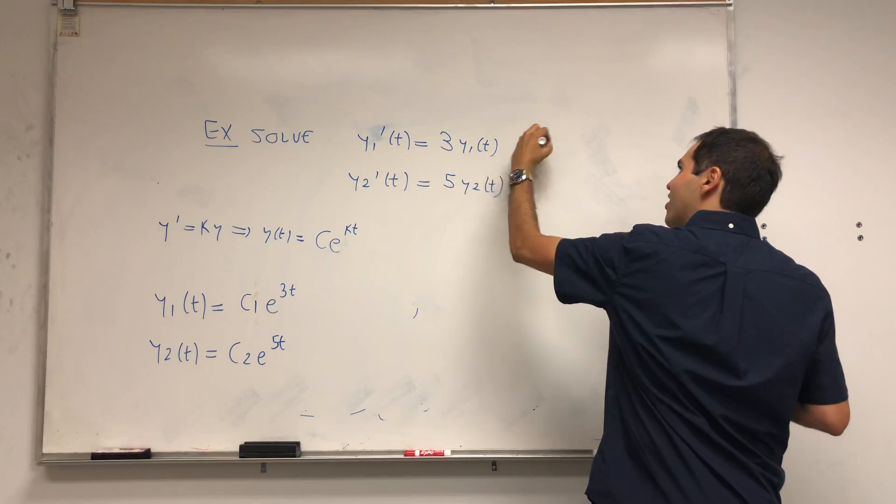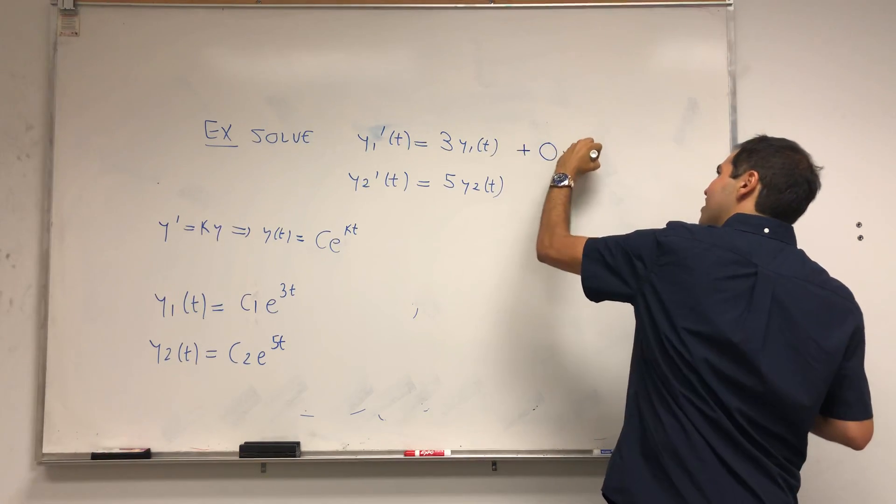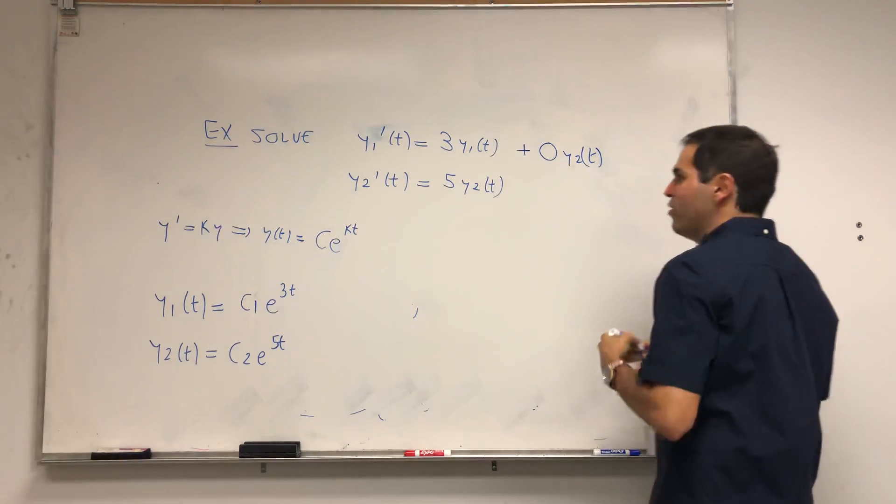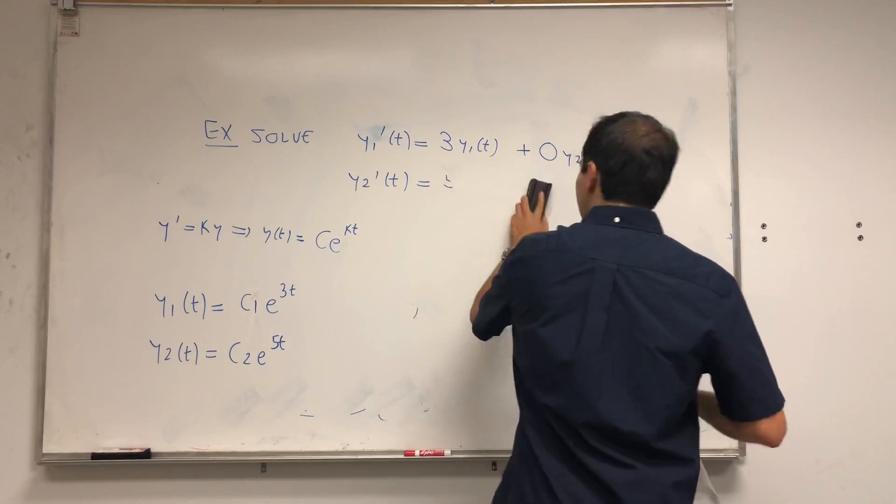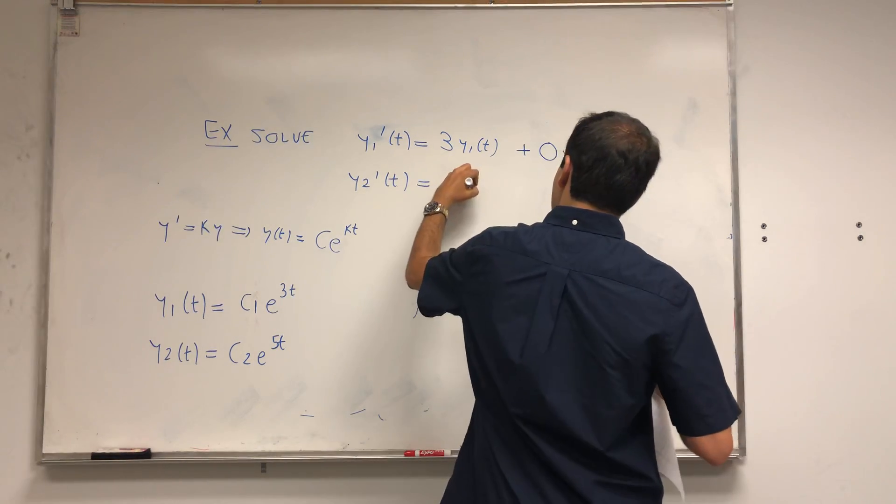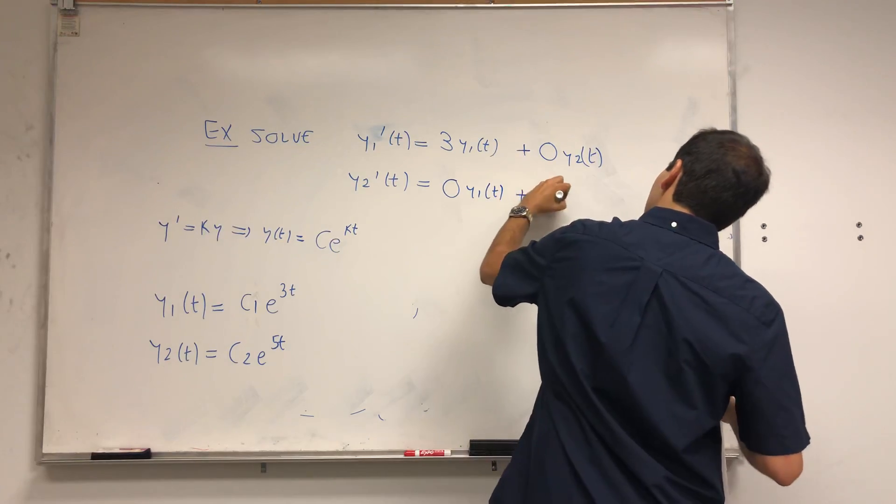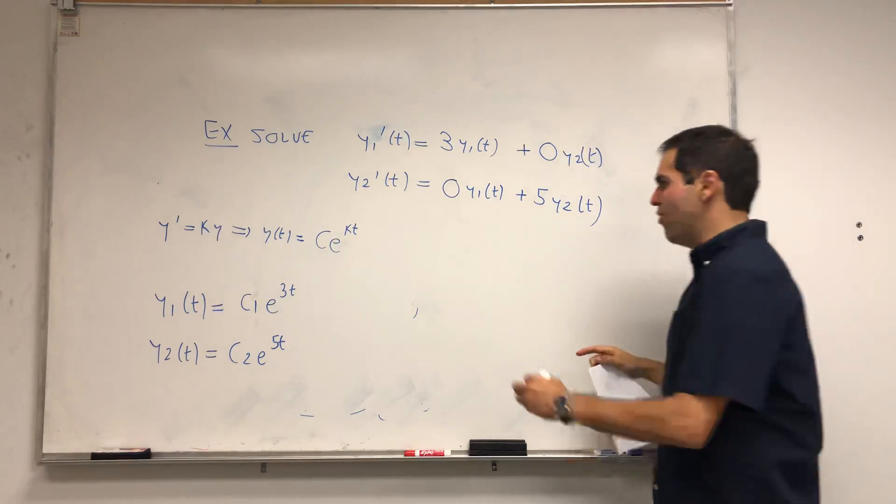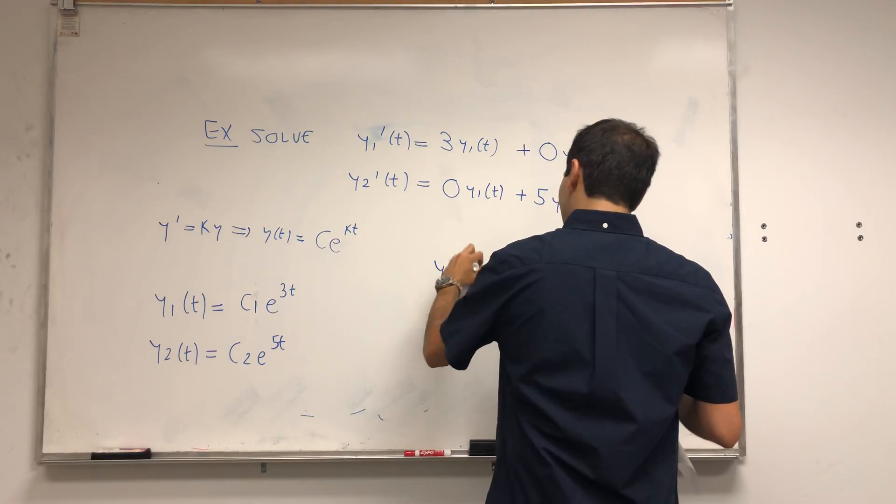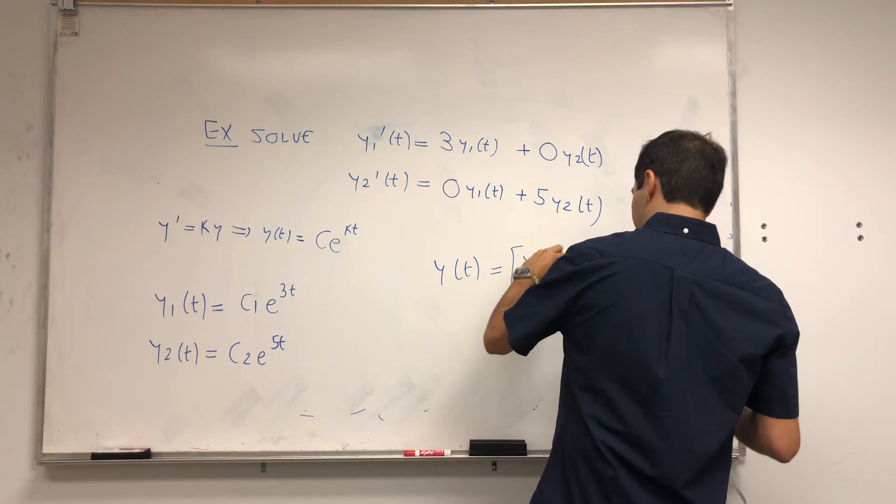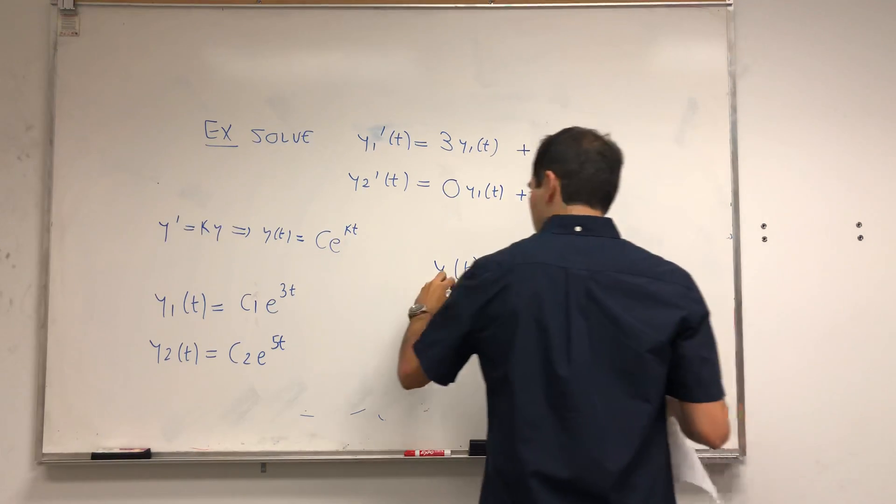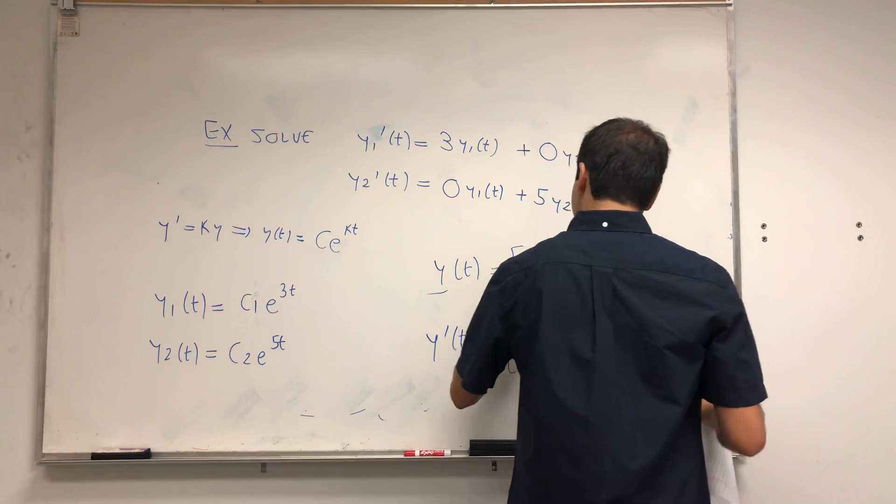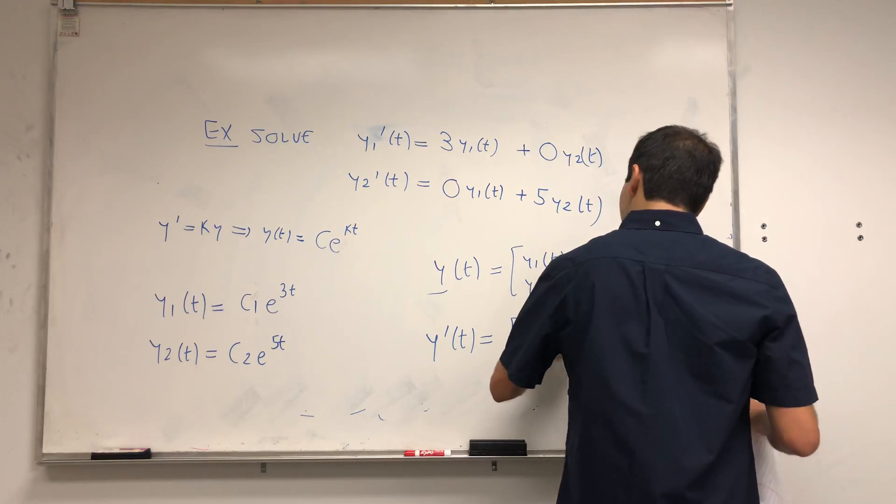This system you can actually write in terms of the previous notation, because this becomes 3y1 of t plus 0y2 of t, and 0y1 of t plus 5y2 of t. If y of t is just [y1 of t, y2 of t], then the system actually becomes y prime of t equals [3, 0; 0, 5] times y of t.